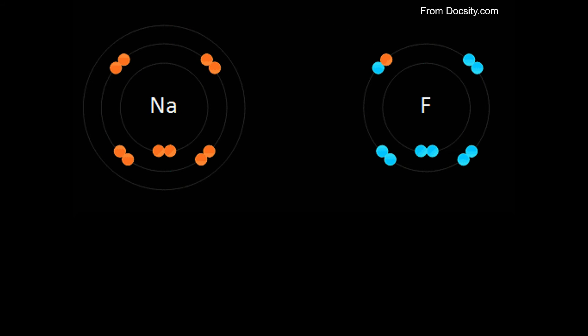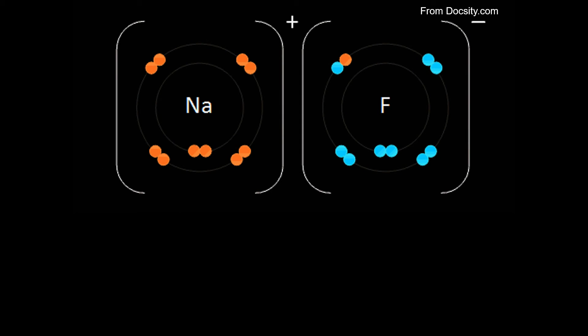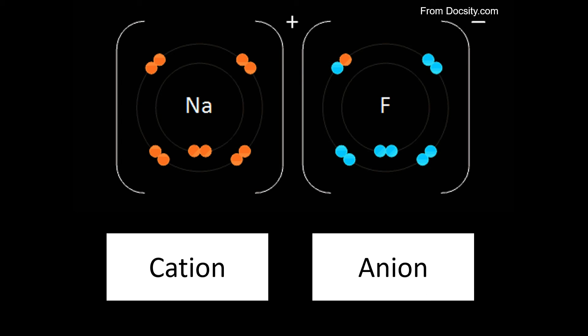While fluorine gains that electron to be stable, receiving an electron means you become more negative, which we call an anion. While giving an electron means you become less negative or positively charged, a cation.